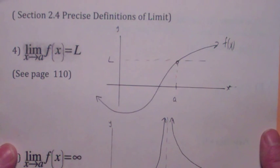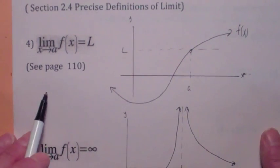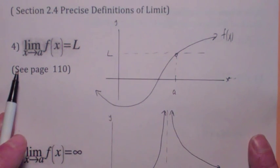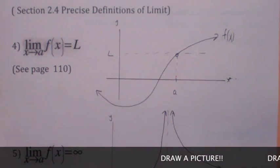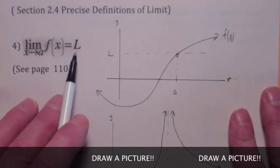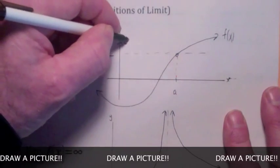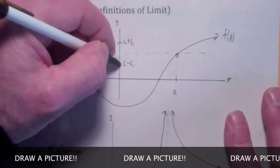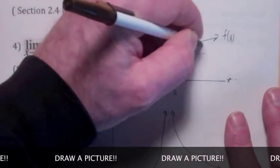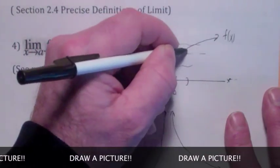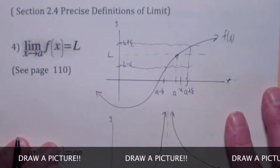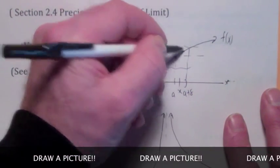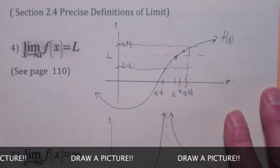The secret in understanding these formal definitions of limits is to draw the picture — you can create the formal definition from the picture. The limit as x goes to a of f(x) equals L: the y values are arbitrarily close to L, within L plus epsilon and L minus epsilon. You have to find a delta interval around a so that if x is in that interval — except possibly equal to a — the f(x) has to be in the epsilon interval around L.